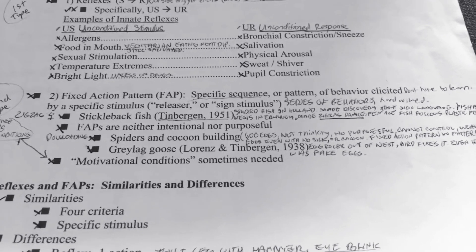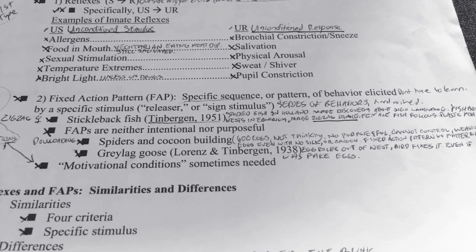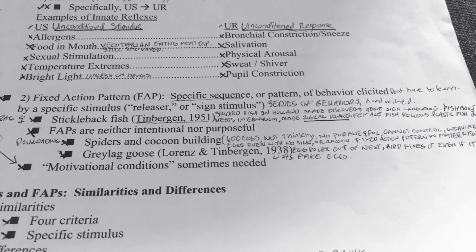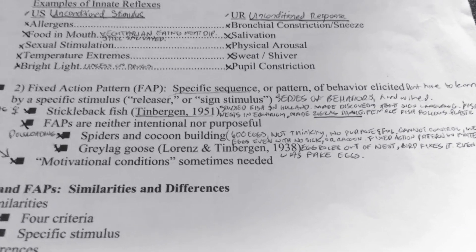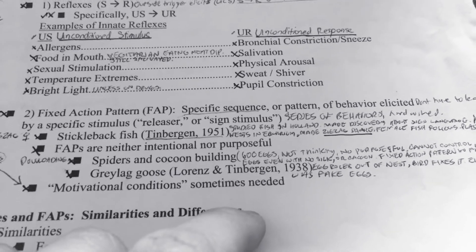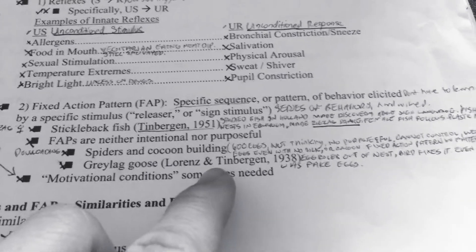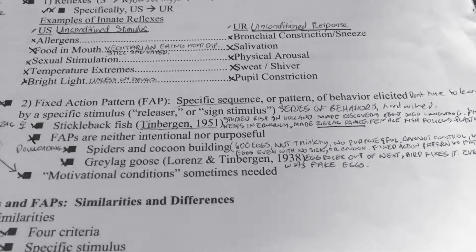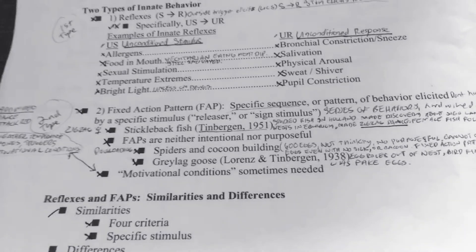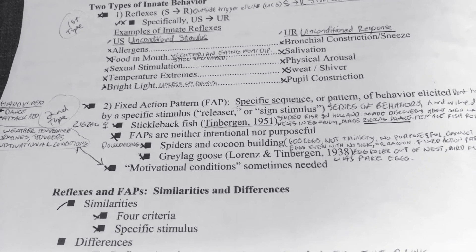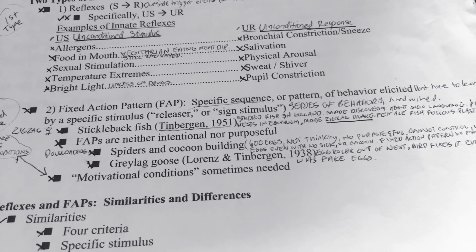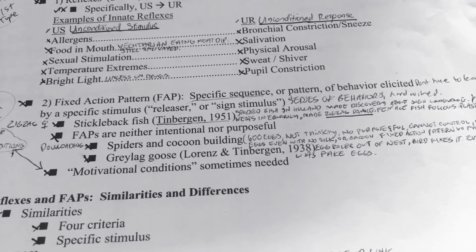A stickleback fish, for example, if it sees a female fish, will do a zigzag pattern to show the female fish that it's ready to mate. The stickleback fish will also swim in a specific way if it sees a fish with a red belly, which would be a competing male fish, and will go into an attack mode.